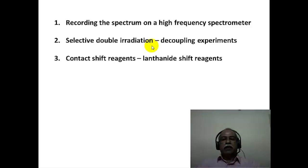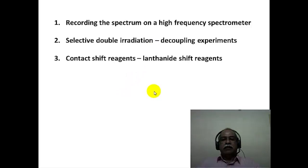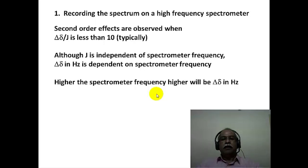First, one can record the spectrum on a higher frequency spectrometer, making the spectrum look simpler. Second, one can perform a double irradiation experiment, selectively decoupling spins so that a complex spin system is reduced to a simpler one. Third, one can use contact shift reagents — lanthanide-based paramagnetic shift reagents that spread out the spectral information to a wider spectral width, making the spectrum much easier to analyze.